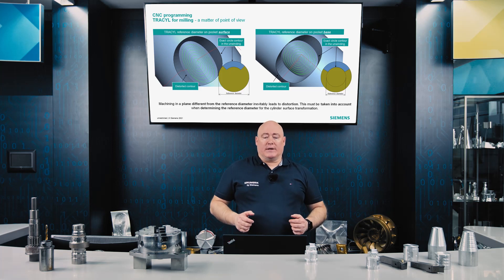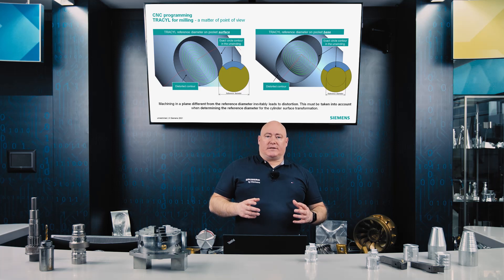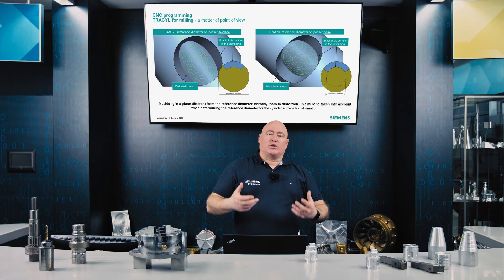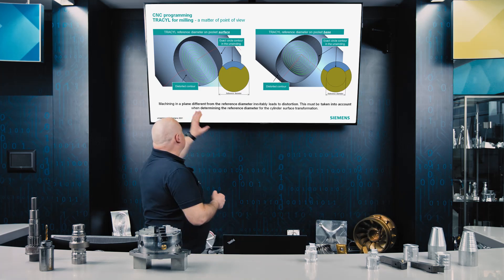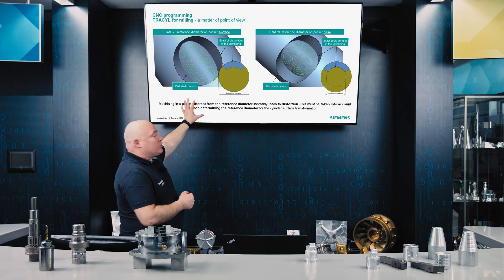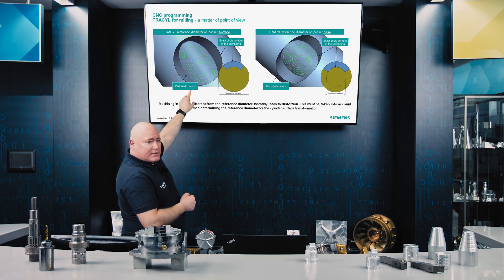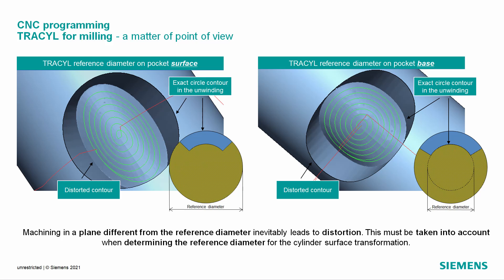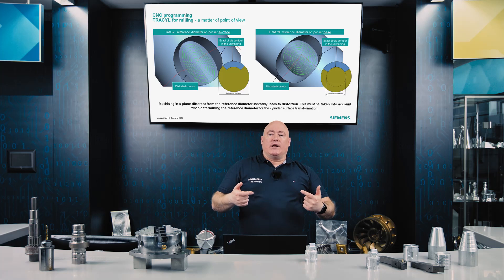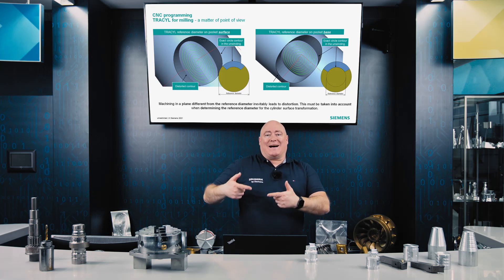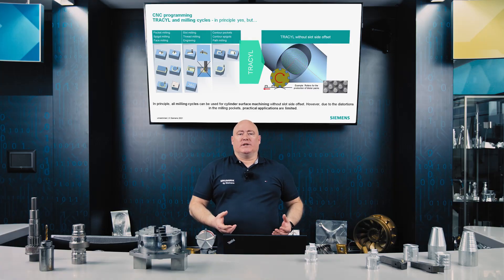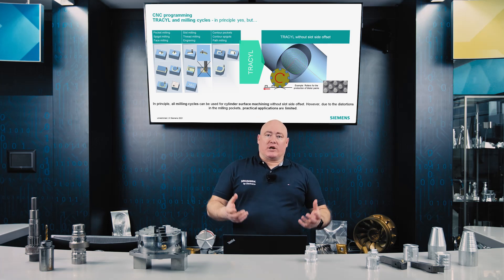When milling with the TRAS-CIL function, we always end up with a distorted contour. Here it's crucial where the so-called reference diameter is defined. As you can see on the left, we get an exact circular contour in the unwinding process on top of the outer diameter of the cylinder, but a distortion at the bottom of the pocket. If the exact circle contour is to be at the bottom of the pocket, we then have the distortion on top on the outer diameter, but there will be a distortion in any case. It's extremely important to define where the distortion shouldn't be — and that's where the reference diameter must be located. Almost all of the milling cycles in TRAS-CIL can be used without restrictions; however, due to the mentioned distortions in the milling pockets, their practical application is limited, such as for thread milling.